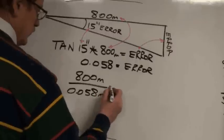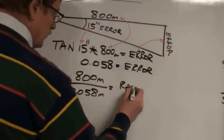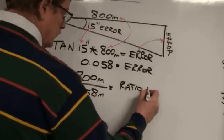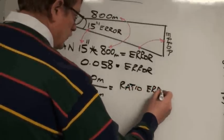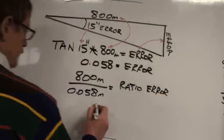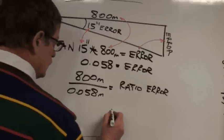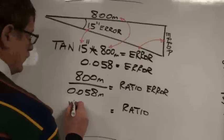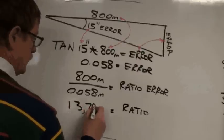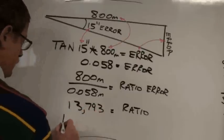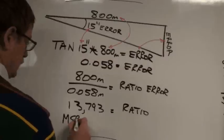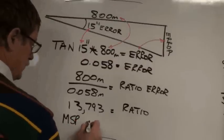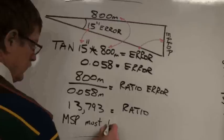Now we need to start our ratio calculation. So we take 800 meters divided by 0.058, and that gives our ratio error. The ratio error in this instance works out to 13,793 meters. The manual and standard practice requires one in 7,500.